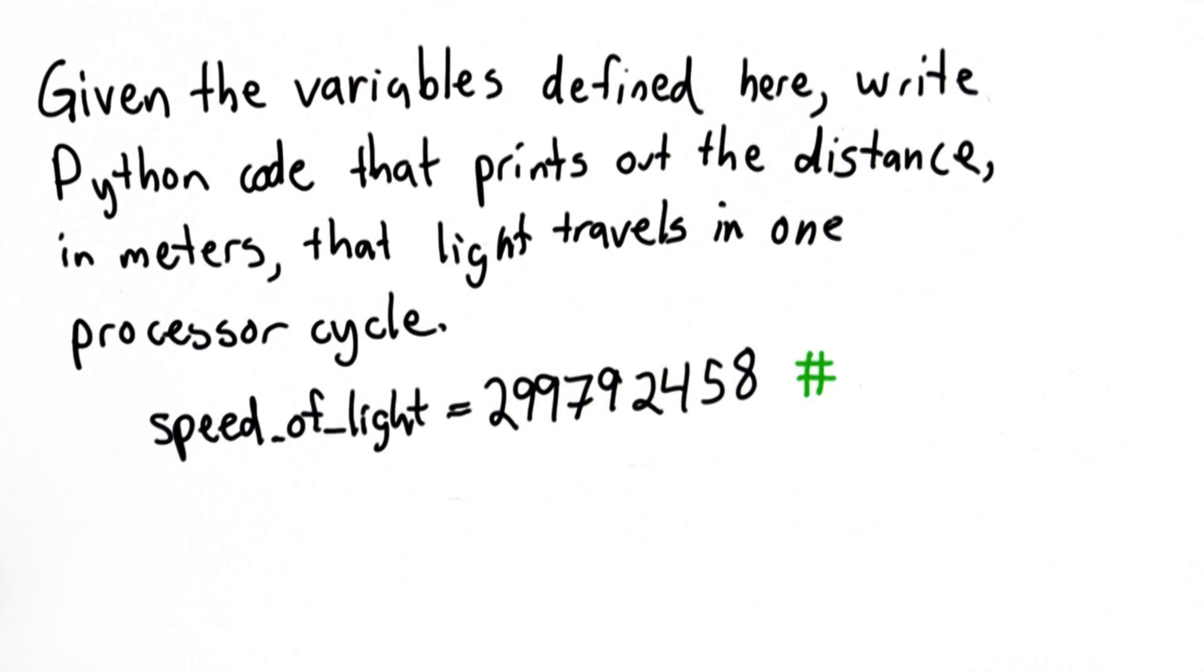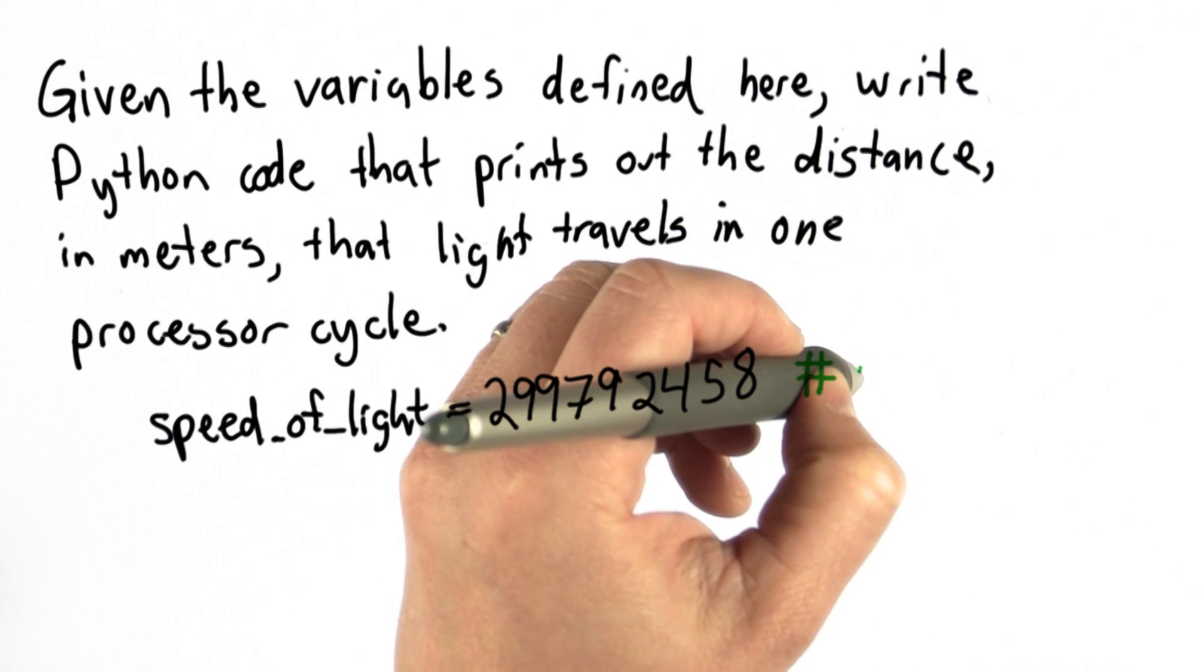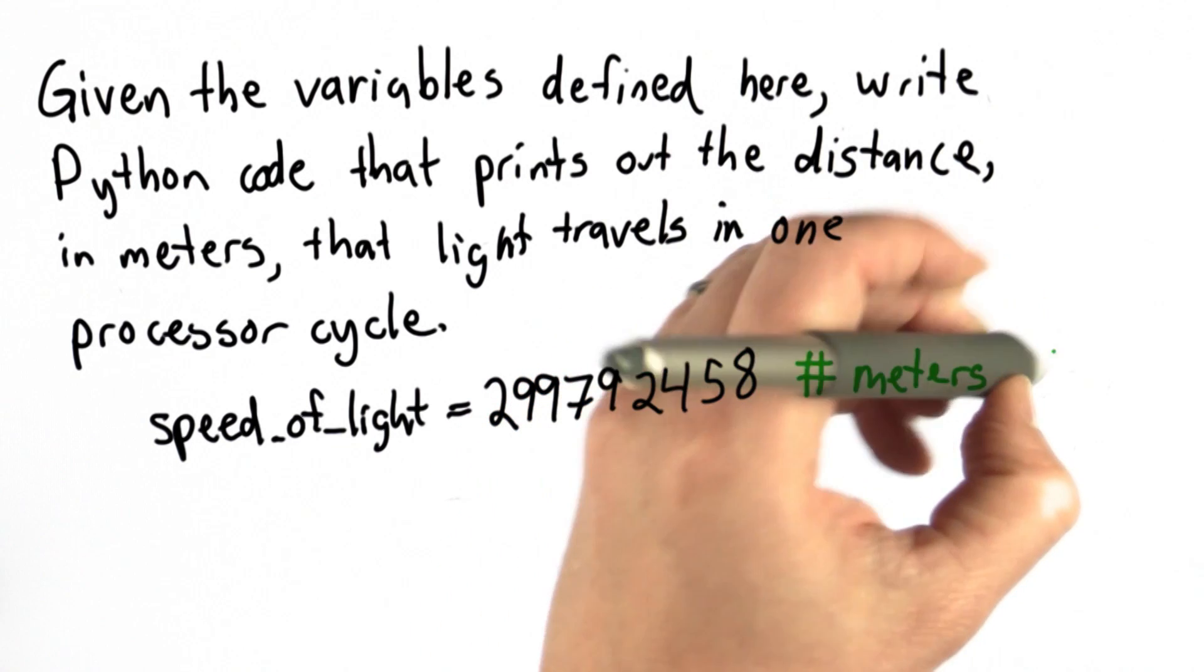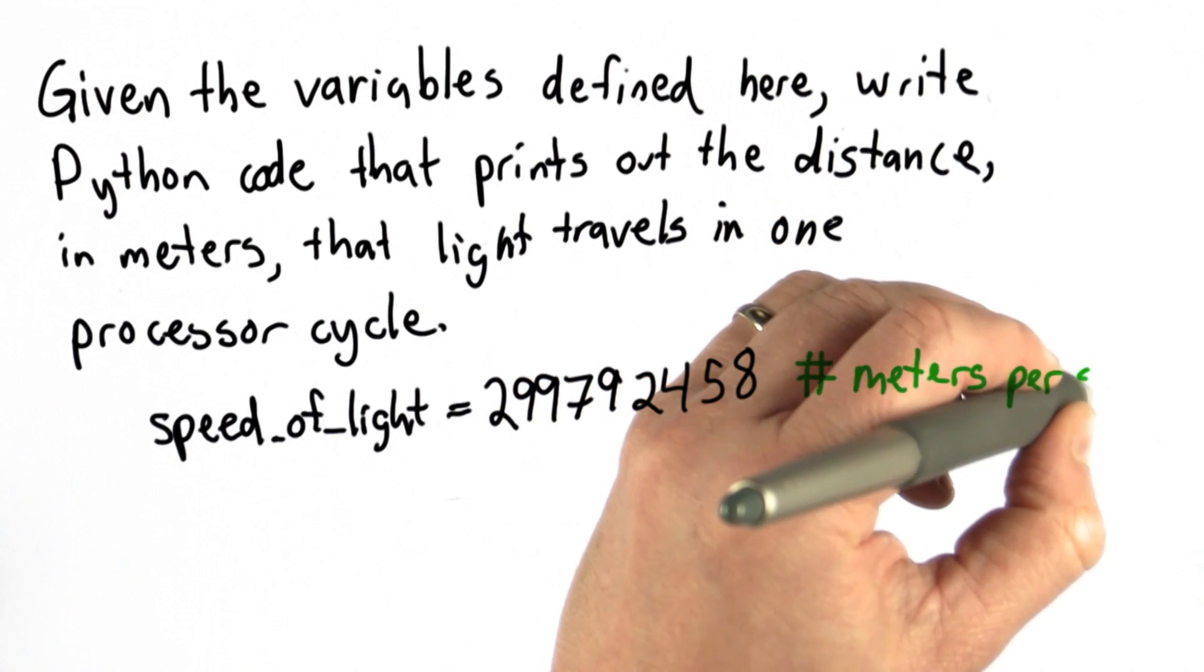We haven't used comments yet, but they're very useful to add to programs. We can write a comment by starting with a hash symbol (usually Shift+3 on most keyboards). Everything from the hash to the end of the line is a comment, meaning it's ignored by the Python interpreter but useful for the programmer to see. So we'll have a comment here that says 'meters per second'.